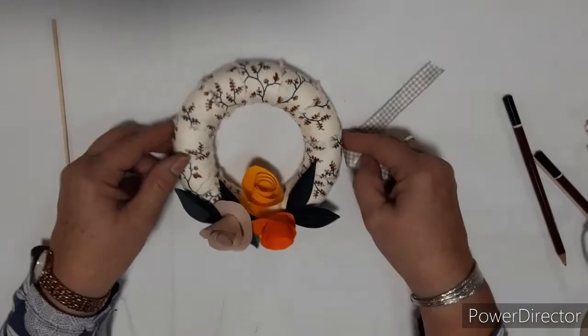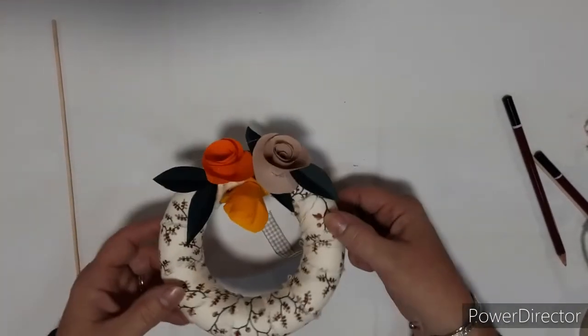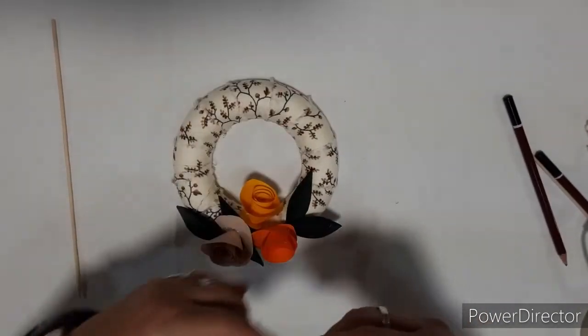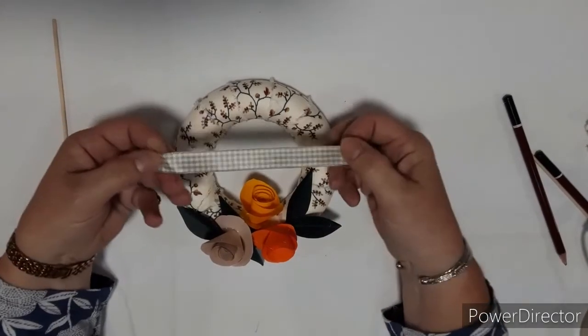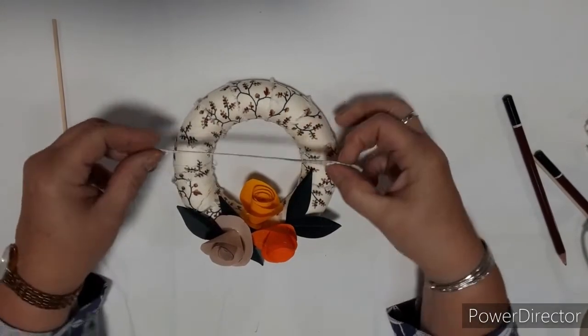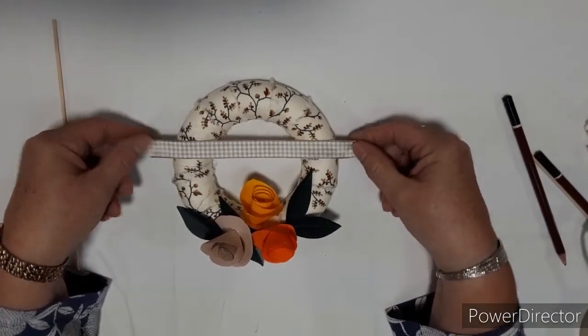So next thing we need to do is to make a hanger. So take a piece of ribbon. Cut a piece off. A small piece that we're just going to use to create a hanging loop.